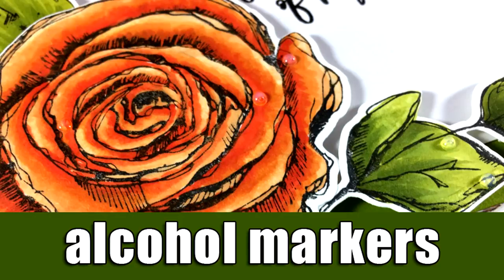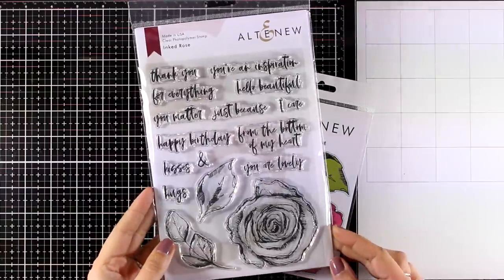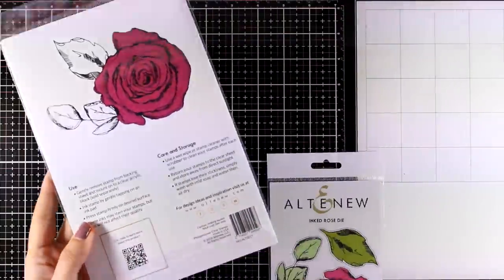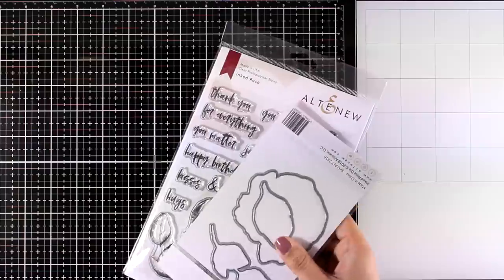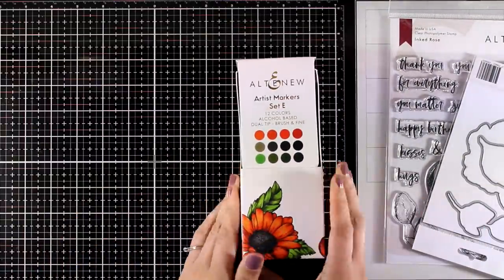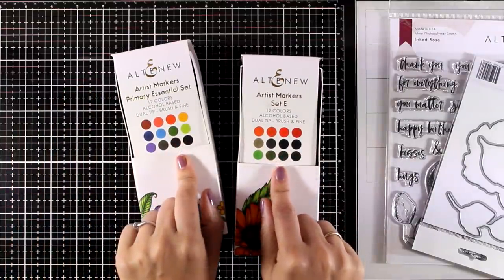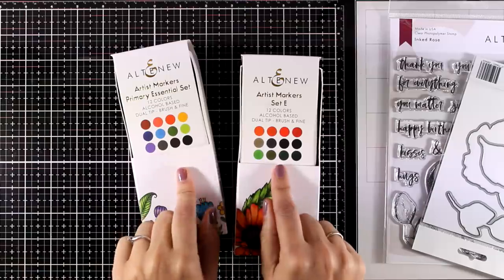Hi and welcome back! Today I have a card for you where I'll be using a really lovely stamp set, this is the Inked Rose by Altenew and I absolutely love the design because it is so sketchy. I also love that it is big and bold so it makes the perfect element for the top of your cards but I also think that it is perfect for art journaling as well.